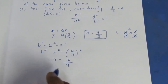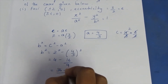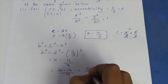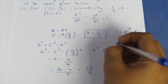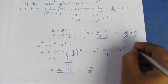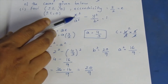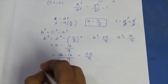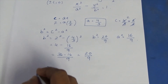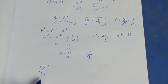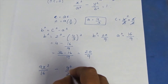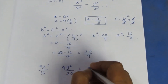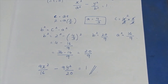Taking LCM as 9, we get 36 minus 16 by 9, which equals 20 by 9. So b-square equals 20 by 9 and a-square equals 16 by 9. Substituting directly into the equation: x-square by 16 by 9 minus y-square by 20 by 9 equals 1. This is the final hyperbola equation.